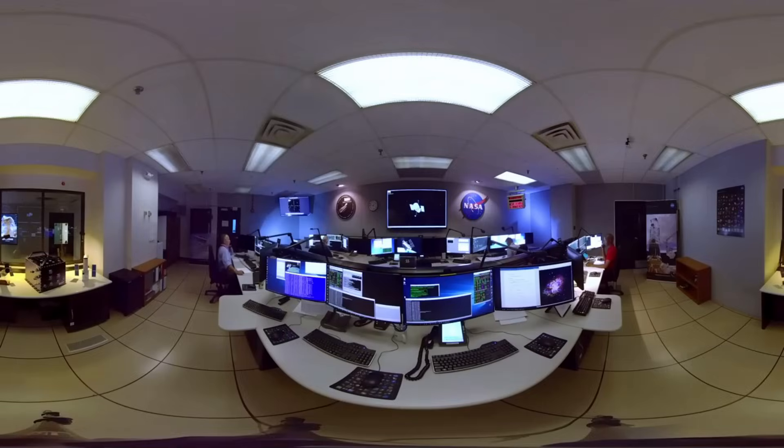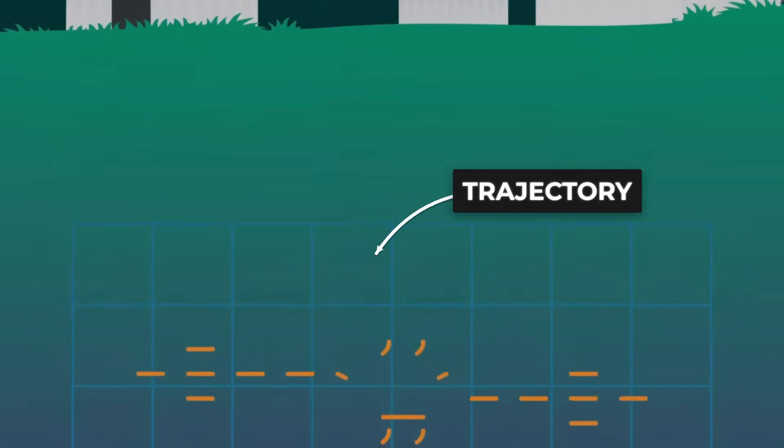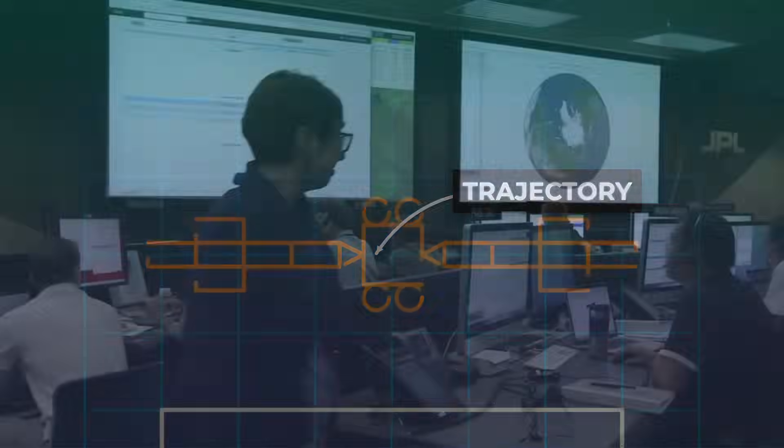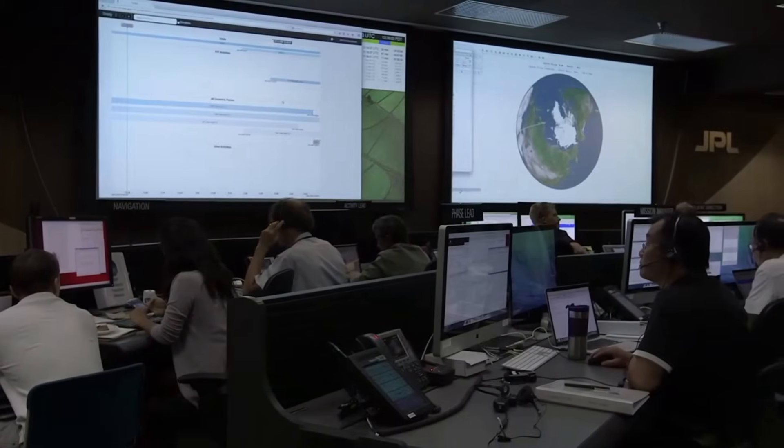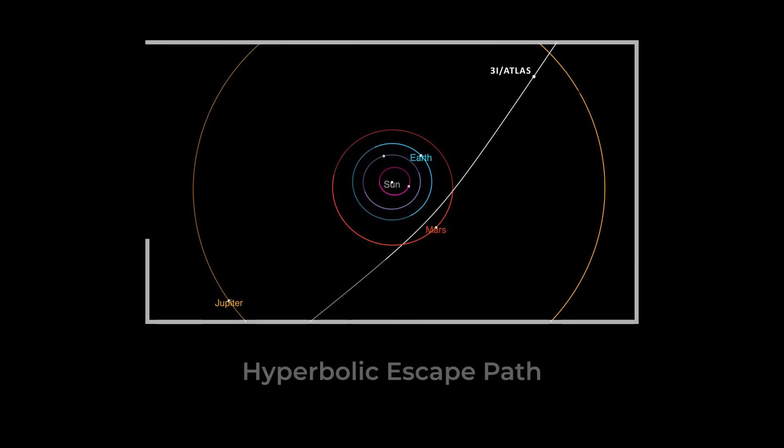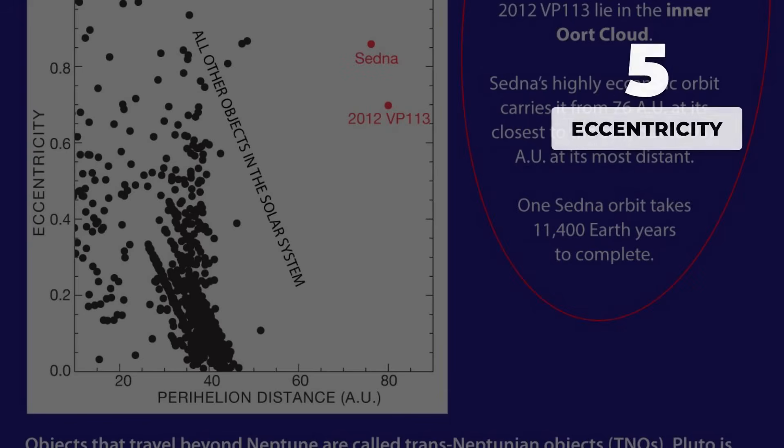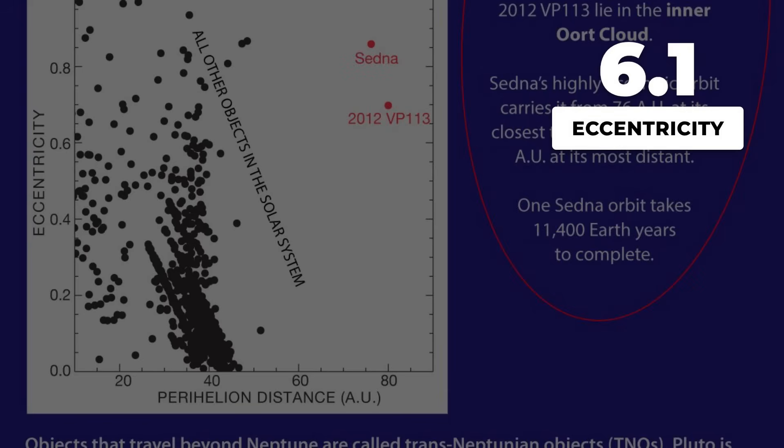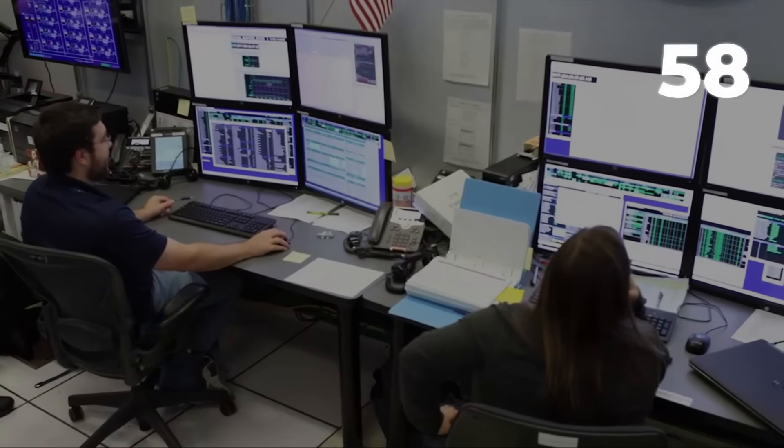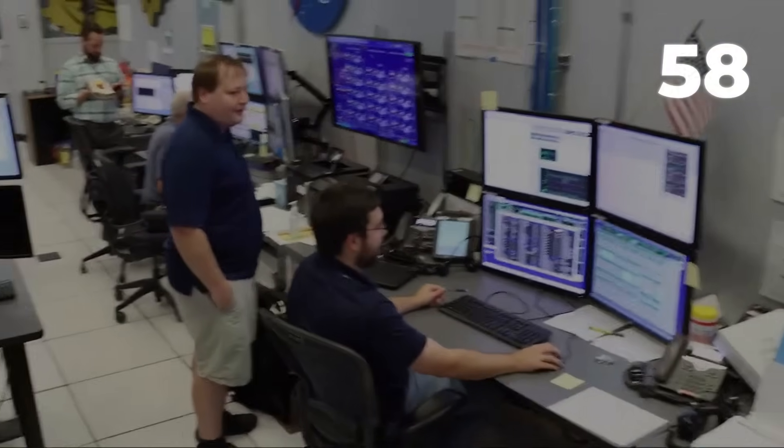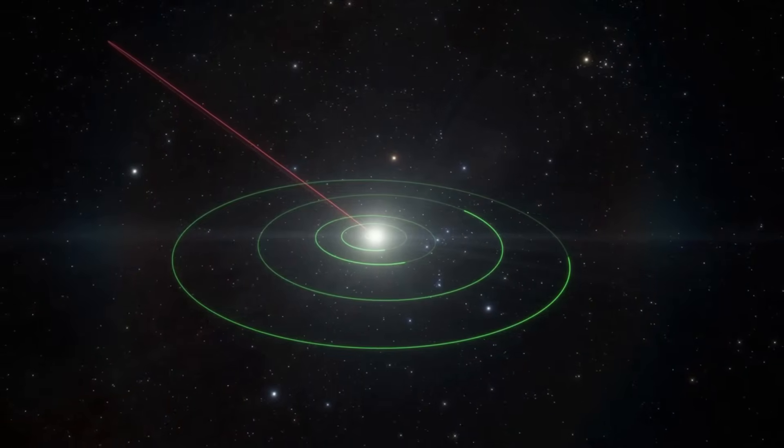Orbital analysts pored over the early data, searching for a pattern that might explain the newcomer's path. The numbers stood out immediately. 3i-Atlas was moving on a hyperbolic course with an orbital eccentricity measured at 6.1, far above the threshold for any object bound to the Sun. Its incoming speed, about 58 km per second relative to the Sun, left no doubt about its interstellar origin.